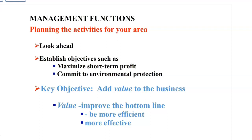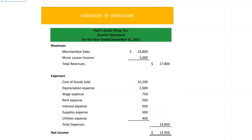Your key objective is to add value to the business. How do you add value? You improve on the bottom line. How do you improve on the bottom line? You become more efficient and more effective — the activities you perform are more efficient or more effective. When you think of managerial accounting, think of the two financial statements you learned in financial accounting: the balance sheet, which tells what the company owns, what it owes, and the equity.